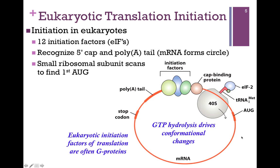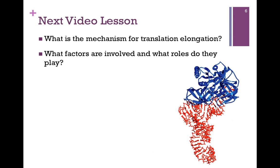The ribosome will scan and find that first AUG. The initiator tRNA has been delivered through EIF2. Eukaryotic initiation factors of translation are often G proteins, and GTP hydrolysis drives conformational changes that drive the whole process of translation.